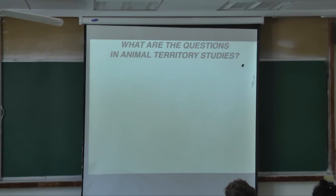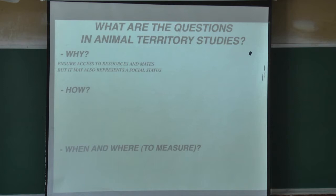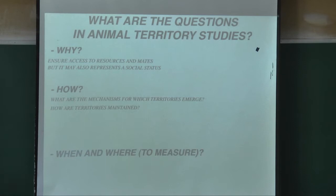The background on questions people ask: why, who, how, when, and where. The 'why' concerns optimality — why do they do it? They want to ensure access to resources and mates, and in some cases it represents social status. The 'how,' which is what I'll focus on, is the mechanism by which you create and maintain these territories.